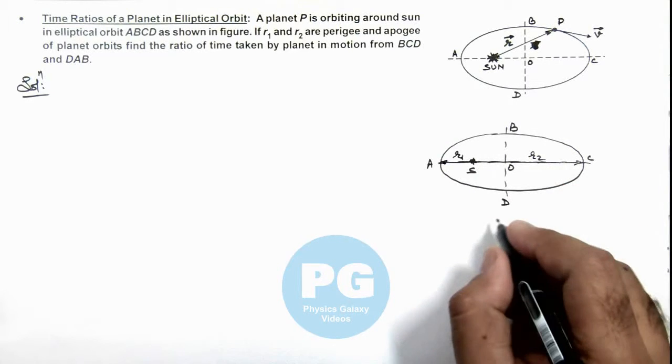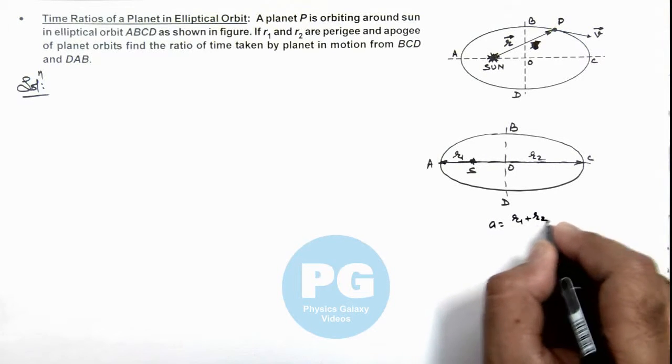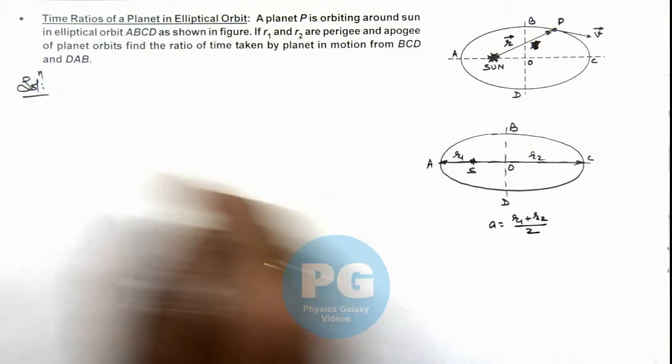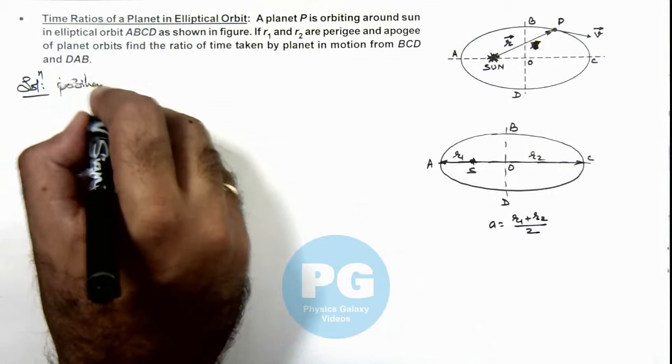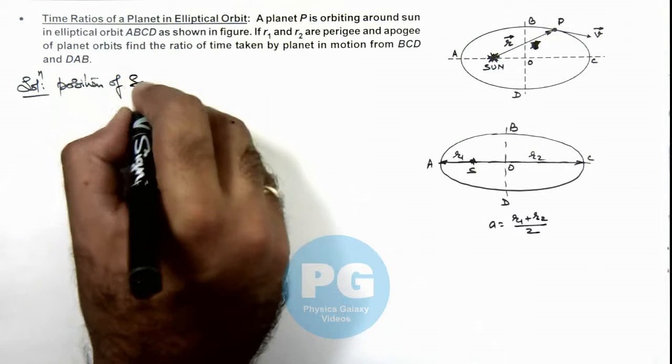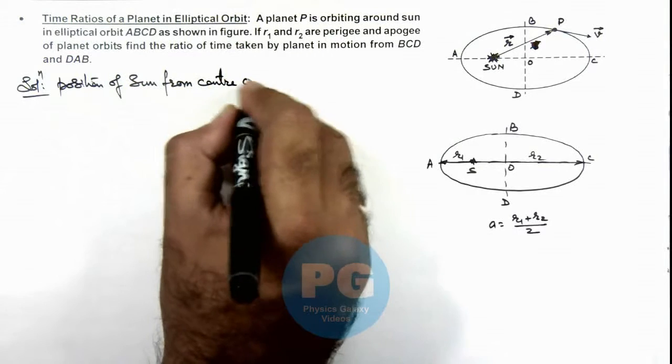So here we can see the semi-major axis a is equal to r1 plus r2 by 2. So here if we calculate the position of sun from center O.